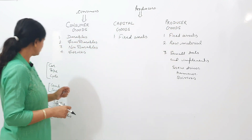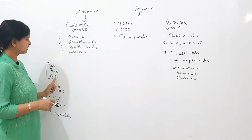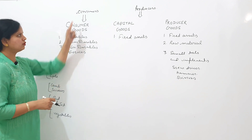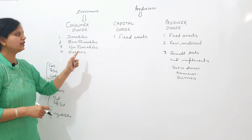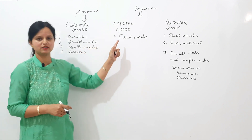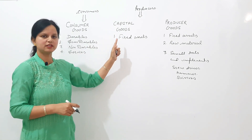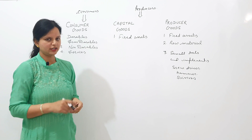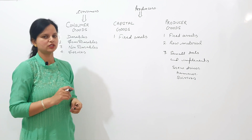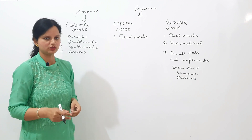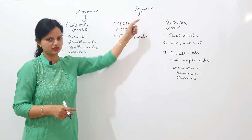Now the example of cycle. If a cycle is purchased by a consumer, then it is a consumer good. And if it is purchased by a circus, it will be deemed as a capital good. So it depends on the end user whether a good is a capital good, consumer good, or producer good. The end users are consumers and producers.